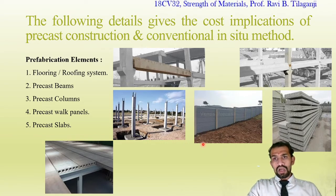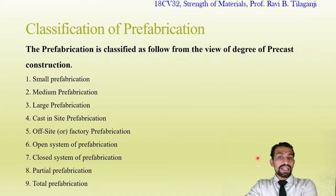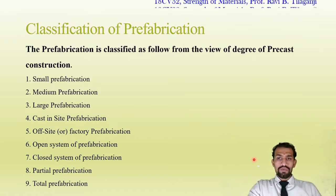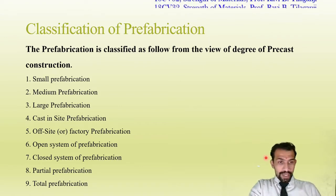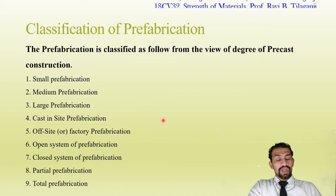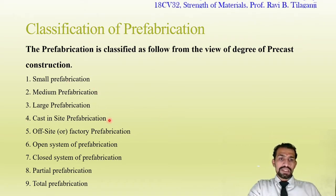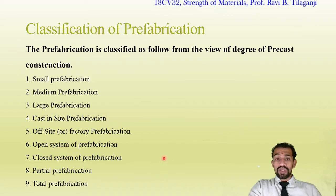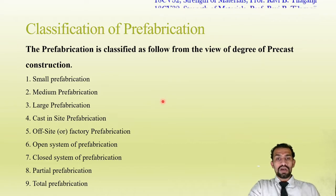Now comes the classification of prefabrication. From the view of degree of precast construction, there are nine types of classifications: small fabrication, medium, large, cast in-site, off-site, open system, closed system, partial fabrication, and total fabrication. Let us see each one in further detail.